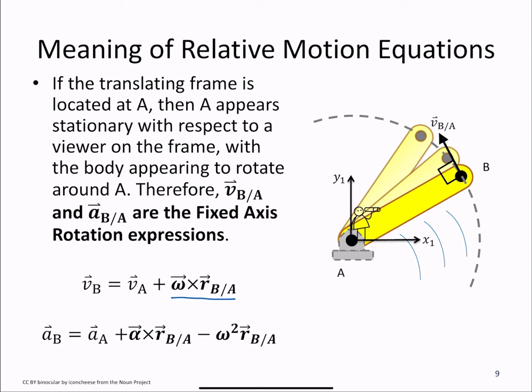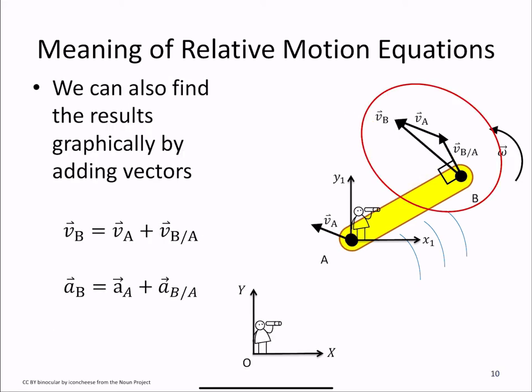And for acceleration, that's alpha cross RB with respect to A minus the scalar omega squared RB with respect to A. We can also find our results graphically by adding the vectors VA and VB with respect to A to find VB. And we can do the same for acceleration.